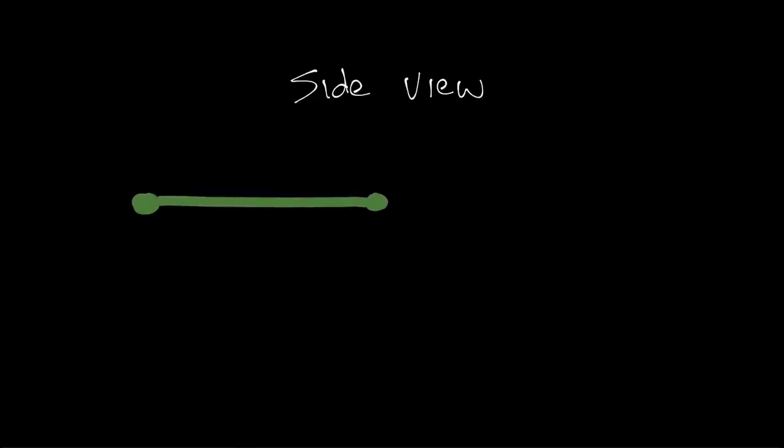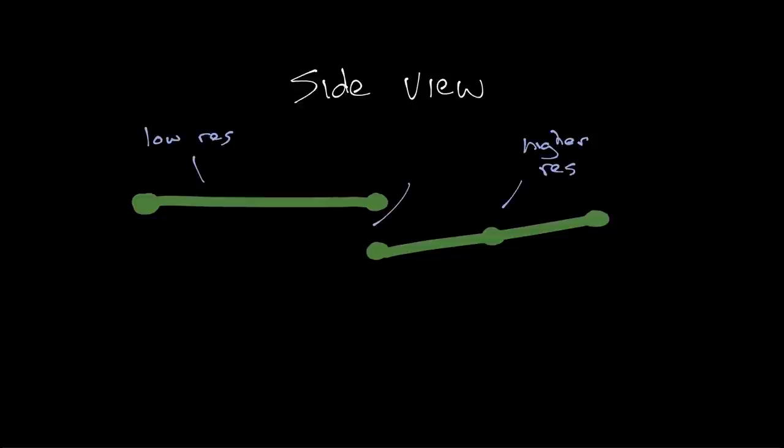But the downside is that, while easy, you may notice inconsistencies in the terrain. If you were to, say, look on the side at two chunks of terrain, instead of the smooth change you'd expect from lower to higher resolution, you'll see this abrupt cliff.